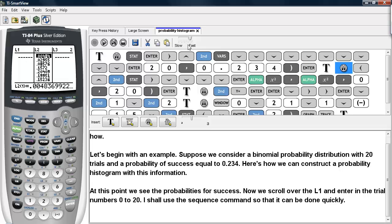At this point, we see the probabilities for success under each number of trials. Now we're going to scroll over to L1 and enter in the trial numbers 0 to 20. I'll go ahead and use the SEQUENCE command so that it can be done quickly.